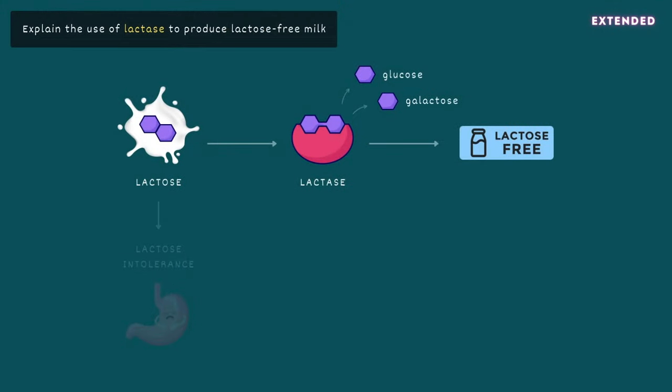Lactose-free milk and other dairy products are made by adding the enzyme lactase to pre-digest the sugar. The lactose is broken down into simpler sugars, namely glucose and galactose, which are easily absorbed by the gut and don't cause symptoms.